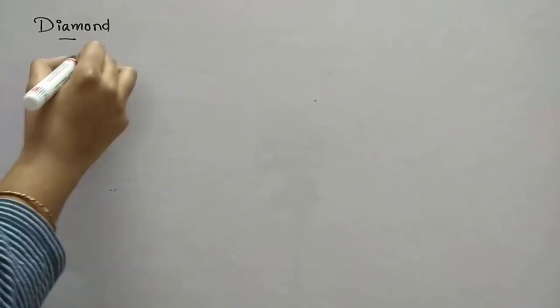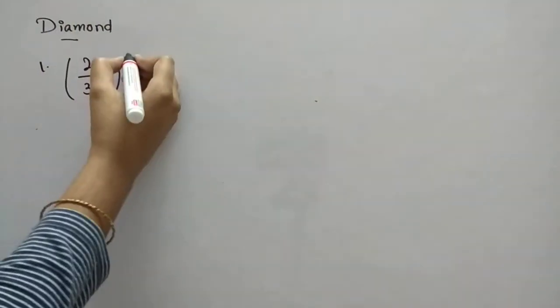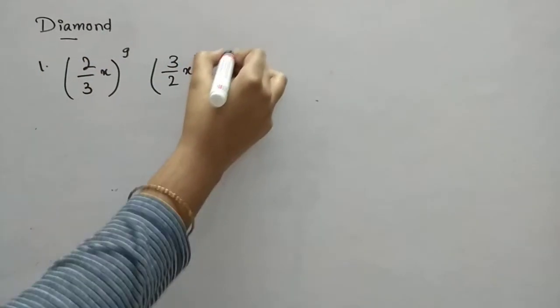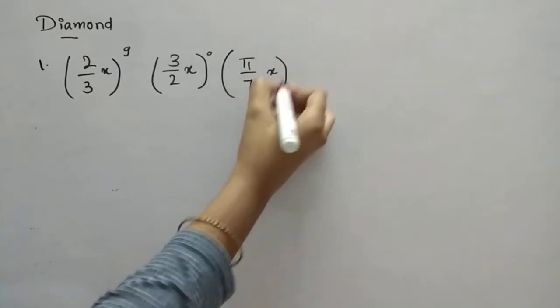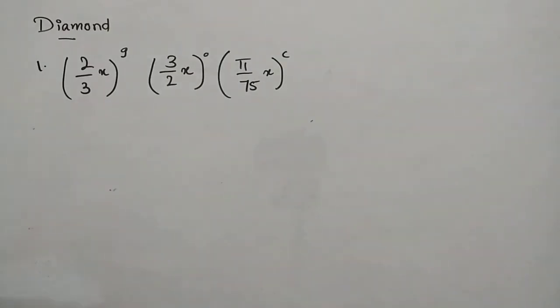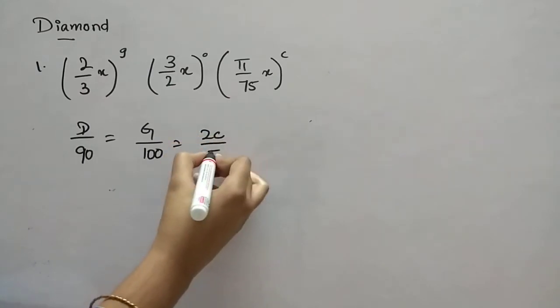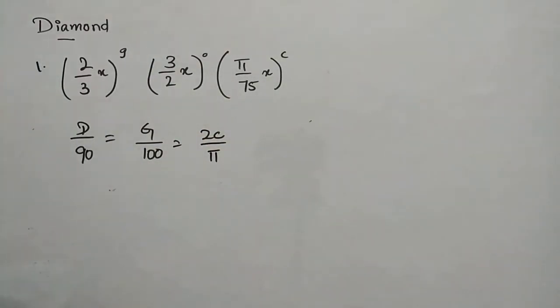Now we will see diamond package. Diamond package first question. If one angle of a triangle is 2 by 3 x grades and other is 3 by 2 x degrees, and the third is pi by 75 x radians. Then we have to find the measure of the angles. So this is a little bit different but we will solve it. First we will write the given data.